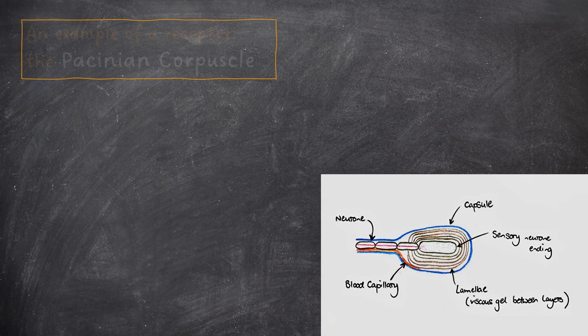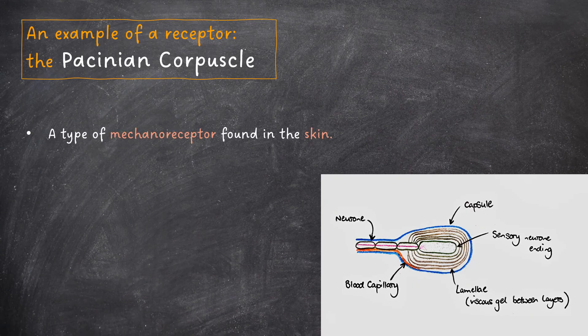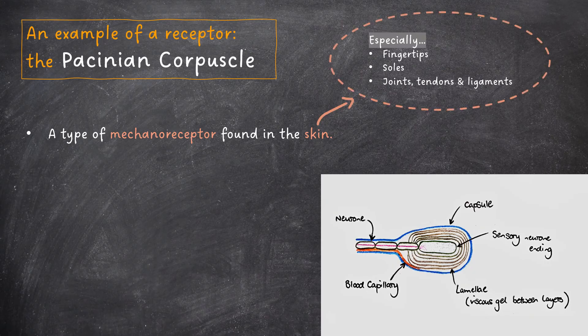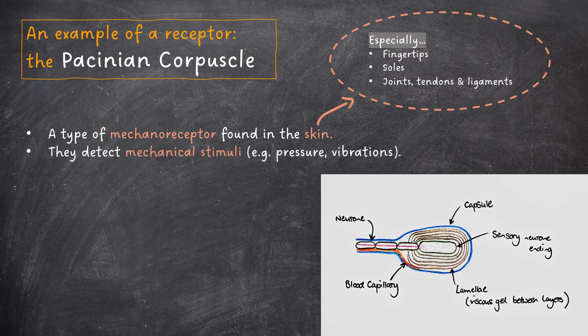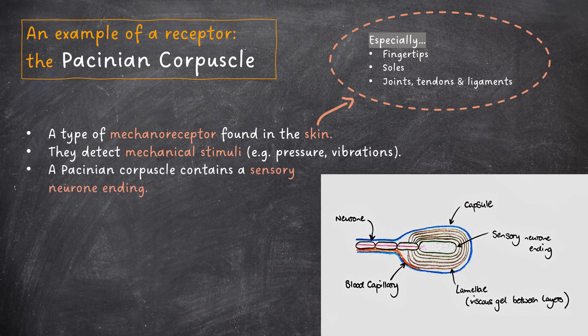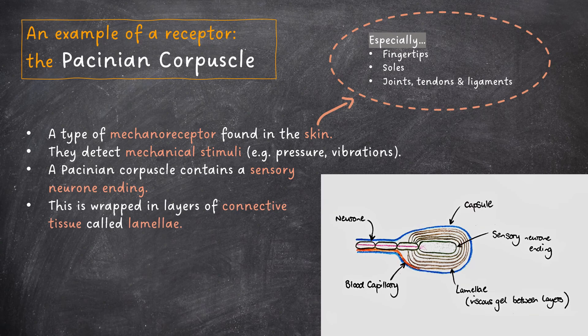The spec wants us to know about the Pacinian corpuscle as an example of a receptor. This is a type of mechanoreceptor found in the skin. They are found in larger concentrations in the fingertips, soles, joints, tendons, and ligaments. They detect mechanical stimuli, such as pressure and vibrations. A Pacinian corpuscle contains a sensory neuron ending, which is wrapped in layers of connective tissue called lamellae.